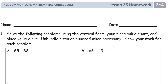Welcome to the homework for lesson 25. This is module four of grade two. Get your name on here first. This is solving problems using vertical form for subtraction. Use your place value chart and place value disks, unbundling tens or hundreds when necessary, and show your work for each problem.